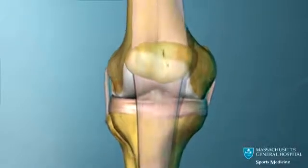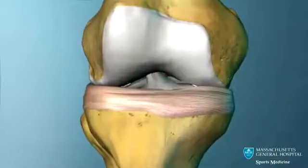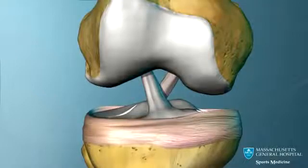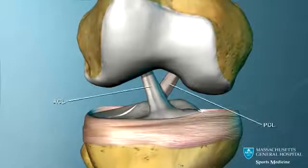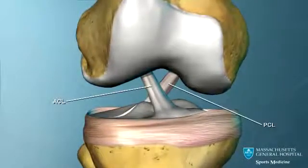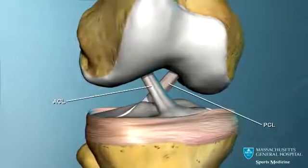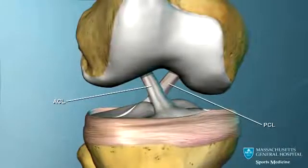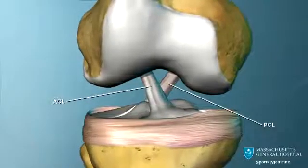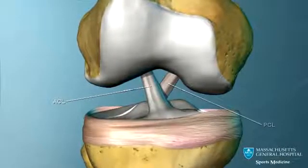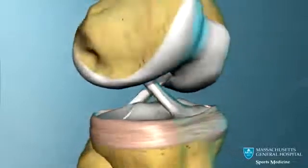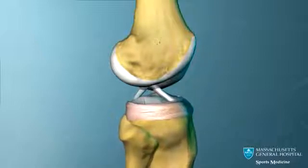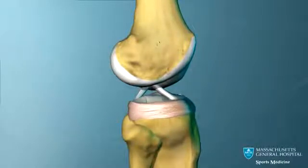Two ligaments cross in the center of the knee. They are called the cruciate ligaments. The ligament toward the front is the anterior cruciate ligament, or ACL, and the one towards the back is the posterior cruciate ligament. The ACL prevents the lower bone, the tibia, from moving forward, and the PCL prevents it from moving backward.